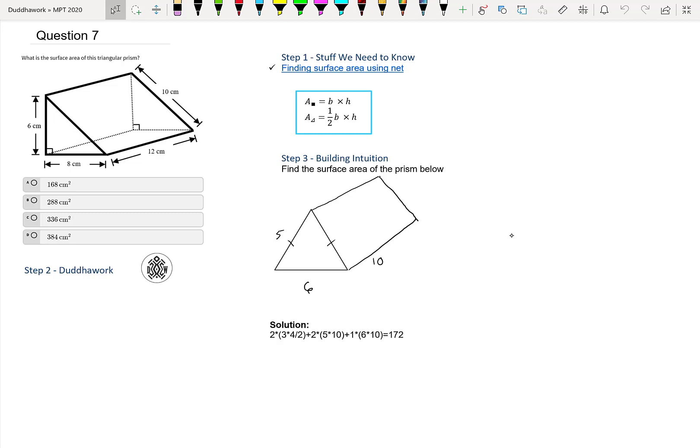So, step 1 of doing any math problem is understanding the question, what we're asked, and the stuff that we need to know, the basic theory behind the question. Here we have a triangular prism, kind of like a chocolate bar, the triangle ones. And we're asked, what's the surface area? Surface area is like the area of every face of that shape. So, we would have two bases, the triangles, and three rectangular sides.